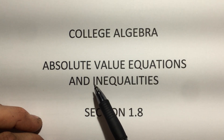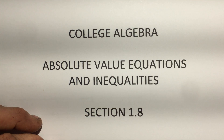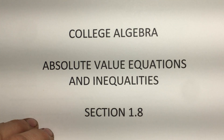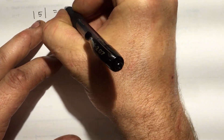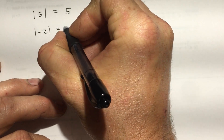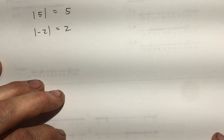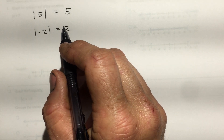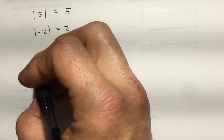All right, college algebra, we're looking at absolute value equations and inequalities — section 1.8. Let's look at absolute value for a minute. The absolute value of 5 means how far that is from zero — it's 5 from zero. That's what absolute value means: how far this number is from zero. The absolute value of negative 2 is just 2. Absolute values always give a positive result.